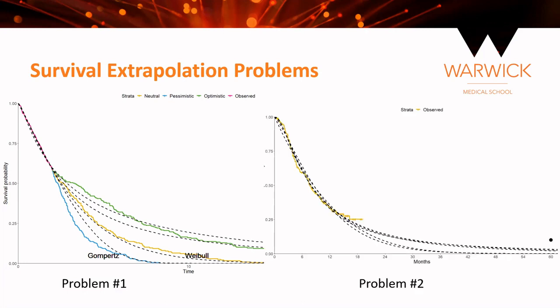Problem number two. This was from one of my very first technology appraisals. We have the control arm of a phase three trial, so all these patients are on chemotherapy. As usual, we fit a series of parametric models to that data and extrapolate into the future. In our critique of this submission, we spotted that Cancer Research UK had published a five year survival rate for this exact population. That's represented by the dot. We were able to deduce that the qualities for this population are probably underestimated.